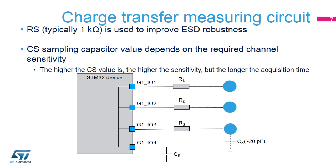To reduce CPU load, two acquisition modes are supported. Normal acquisition mode, where the acquisition starts by setting the start bit of the TSC_CR register. Synchronized acquisition mode, where the acquisition only starts upon detection of a falling or rising edge or a high level on the sync input pin. This mode is useful to limit effective noise in some applications, such as an induction cooktop.